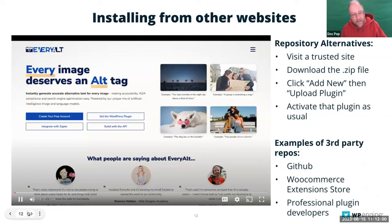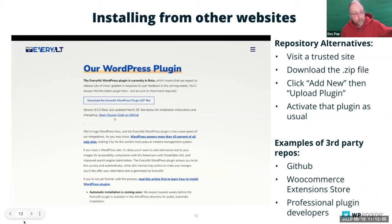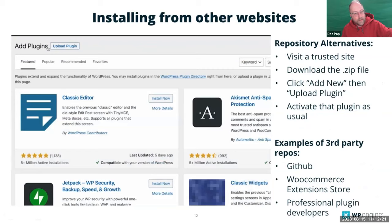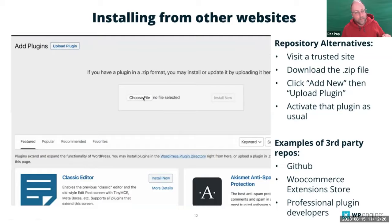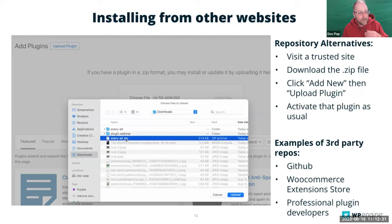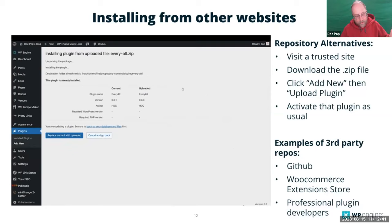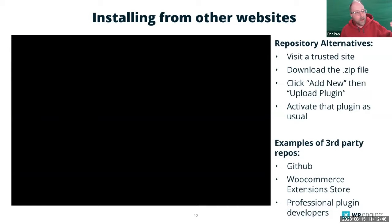Everything I've shown so far has been from the WordPress repository, searched from within the dashboard. You can also download plugins from other sites. In this case I'm on Every Alt, which uses AI to help provide alternative descriptions for images. You download from there, then go to Plugins > Add New > Upload Plugin. The file you download should be a zip file — you can only upload zip files as plugins, so don't uncompress it. Upload the whole zip file and click Install Now.